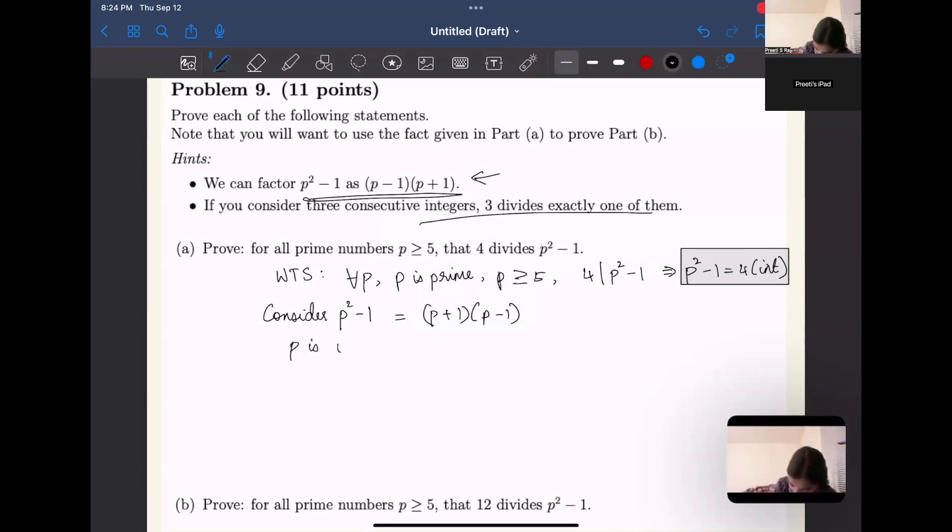p has to be odd because p is prime and also because p is not equal to two, because p is greater than or equal to five. So I know p has to be odd. If I know p has to be odd, therefore the number that comes before p and the number that comes after p both have to be even because consecutive integers.